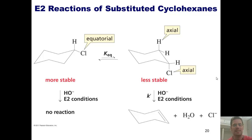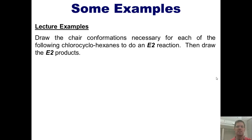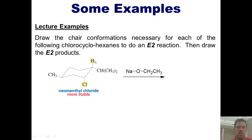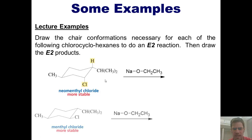Let's look at some examples. Draw the chair conformations necessary for each of the following chlorocyclohexanes to do an E2 reaction, then draw the E2 products. Here's the first example: I've got this chair structure and I'm treating it with a strong base under E2 conditions. Does this chlorine have a hydrogen next door that is anti-periplanar to it? Of course it does, because the chlorine is in the axial position. The base will come in, form a bond with this hydrogen, thrust the electrons down, forming a carbon-carbon double bond, and kick off the chloride. You will also get elimination across this carbon-carbon bond, but the major product will be the one between these two positions, because it gives you the more substituted alkene by Zaitsev's rule.